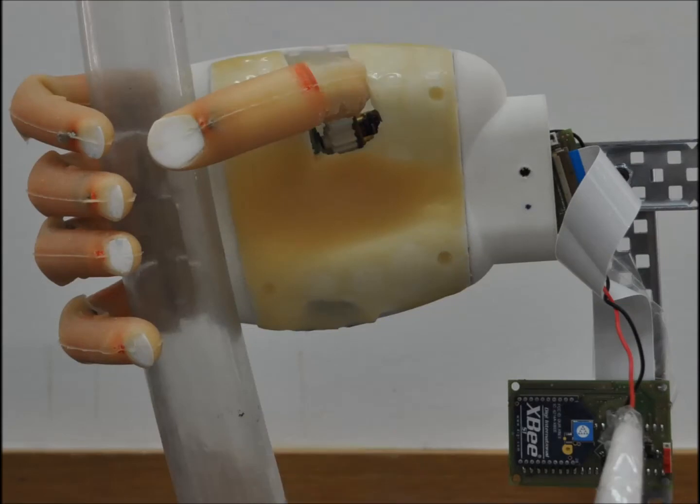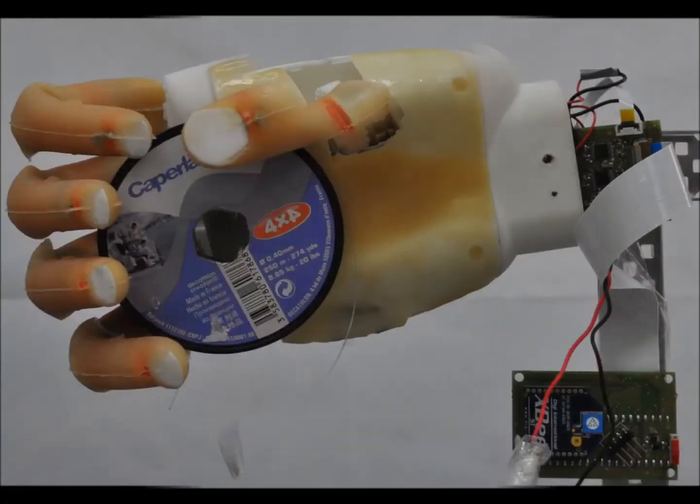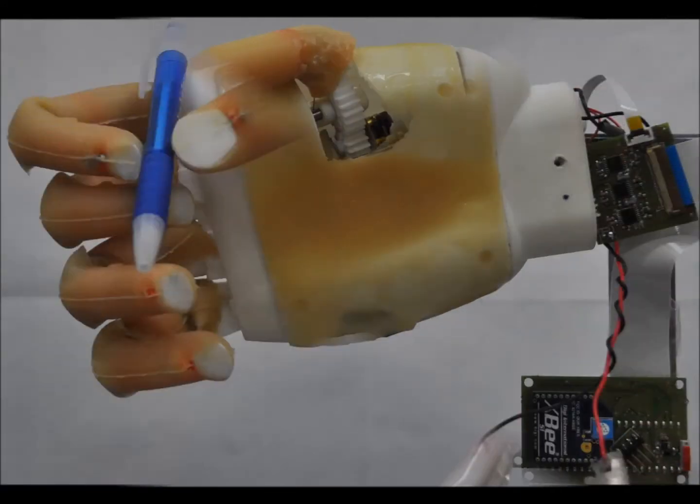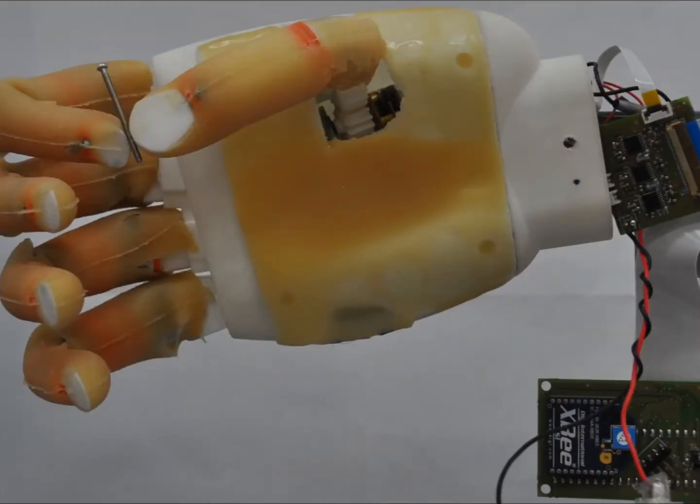In addition, we designed the system to be non-backdrivable. That is, actuators can be turned off after forming a grasp. This enables the hand to hold its form without consuming energy.